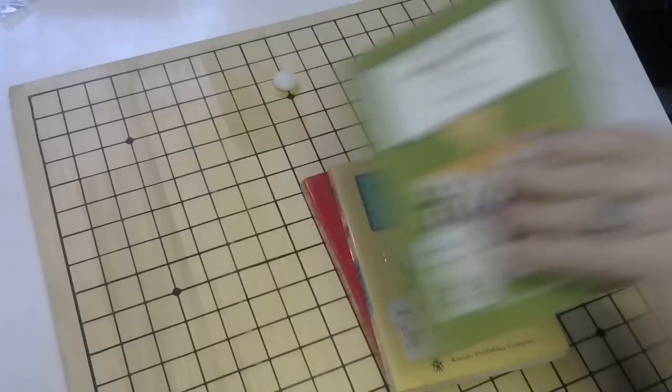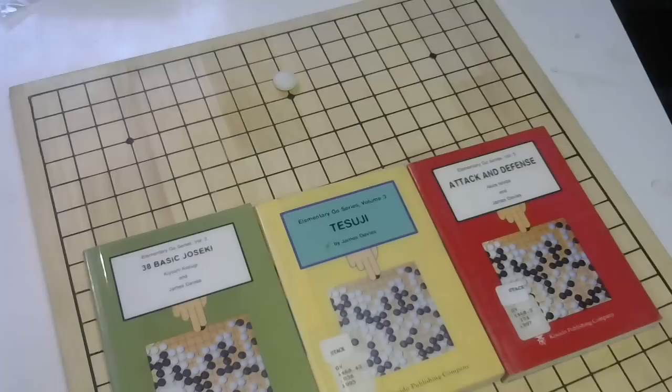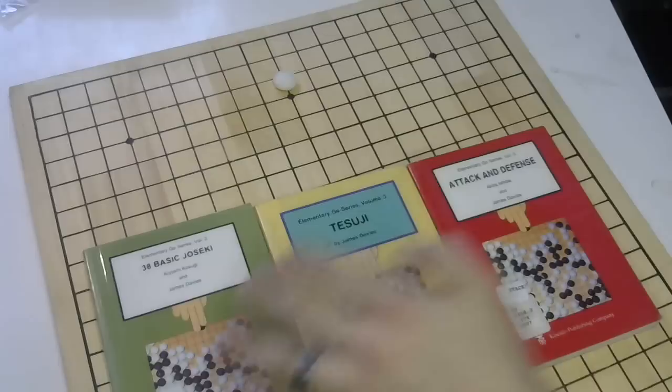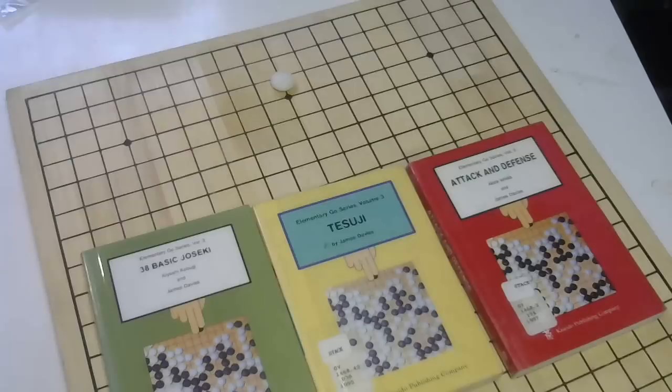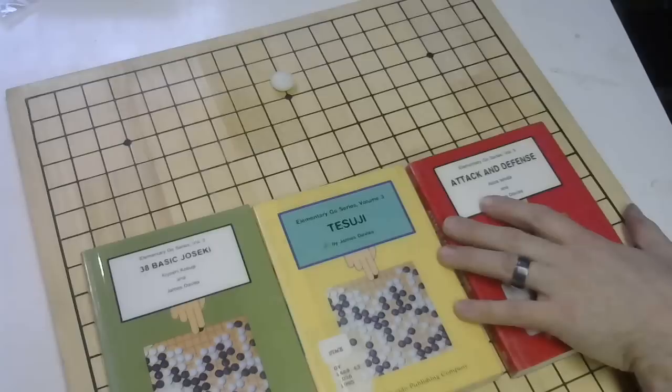These are the Elementary Go series books. There are six of them. There's Opening, Joseki, Tesuji, and then there's Life and Death, Attack and Defense, and then there's Endgame, and then there's Handicap Go.